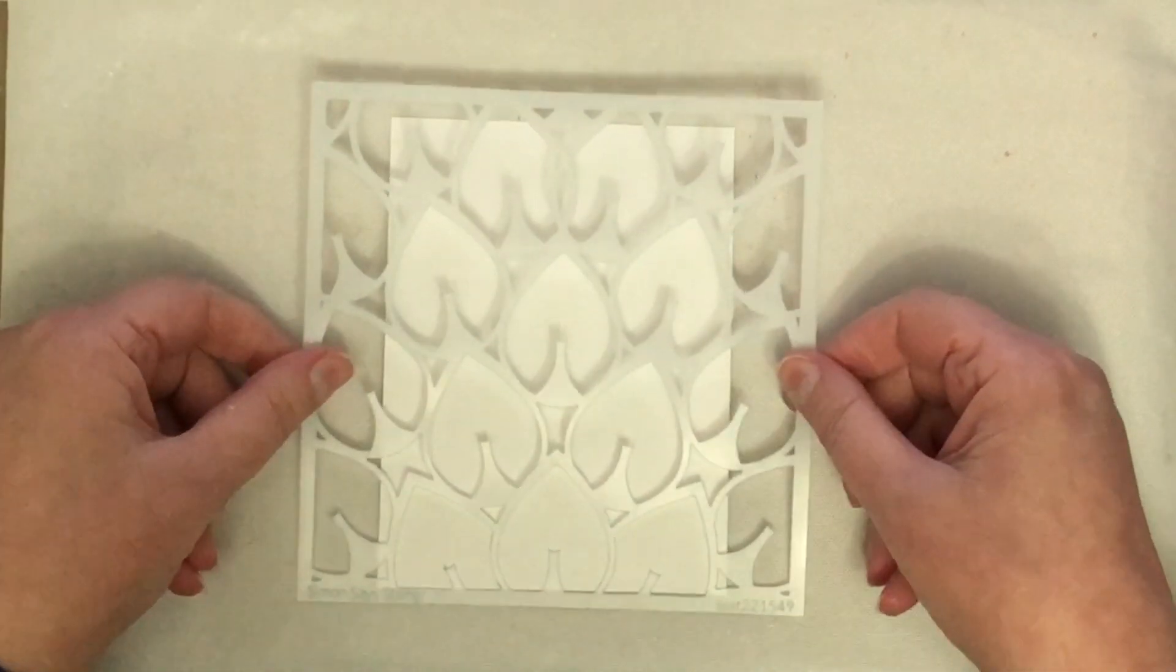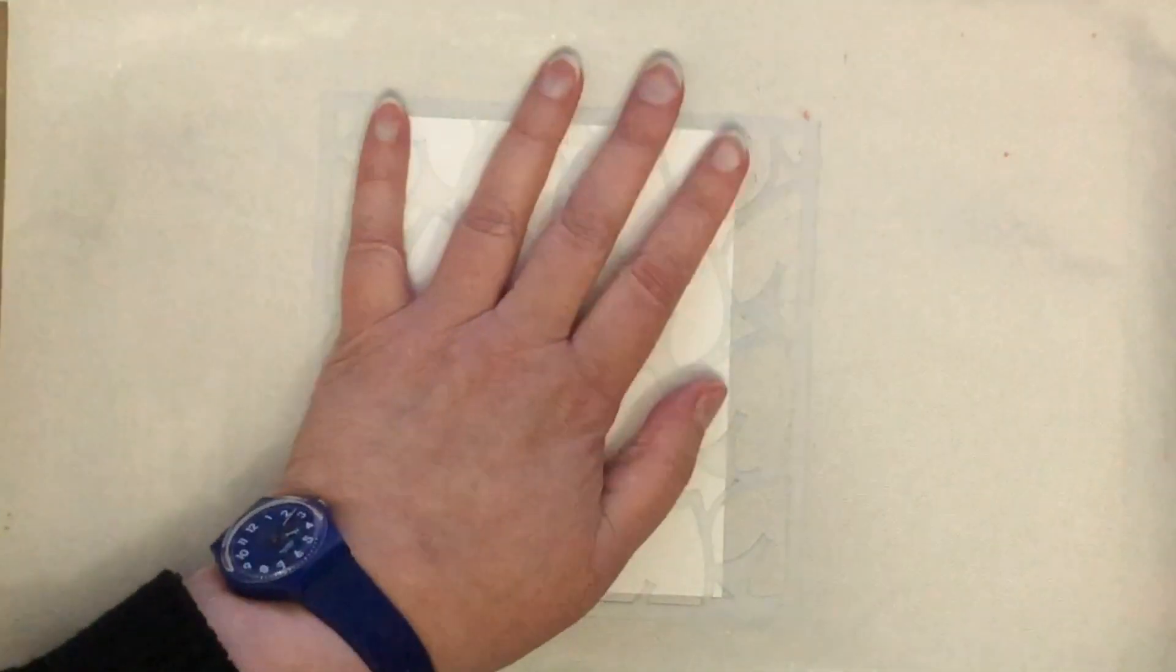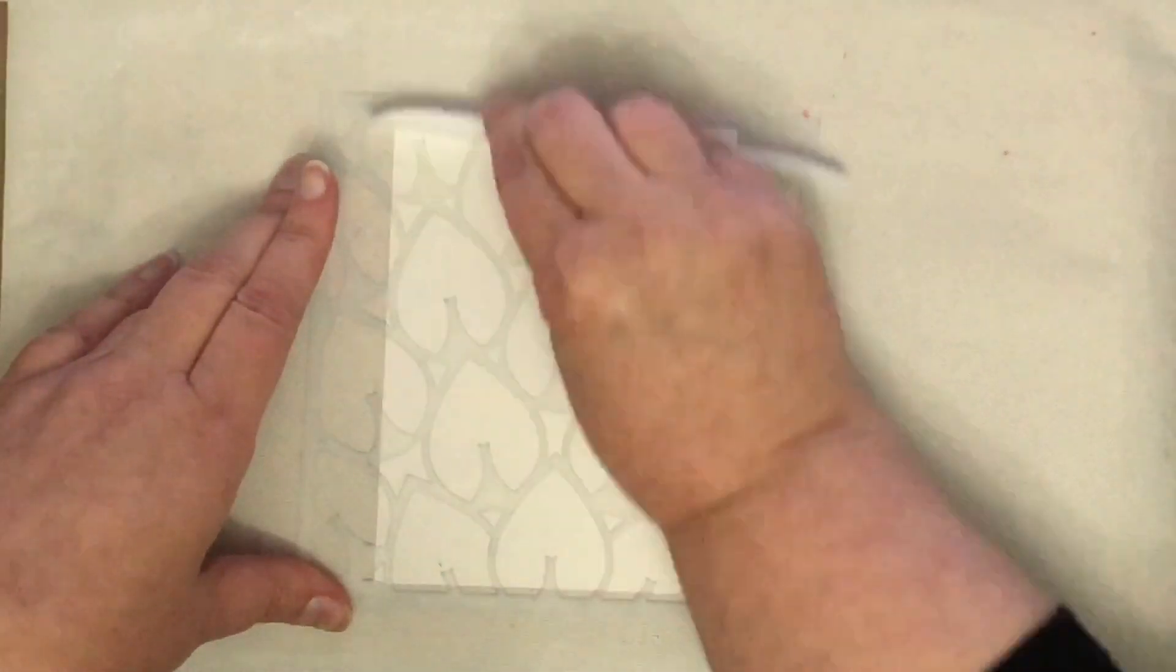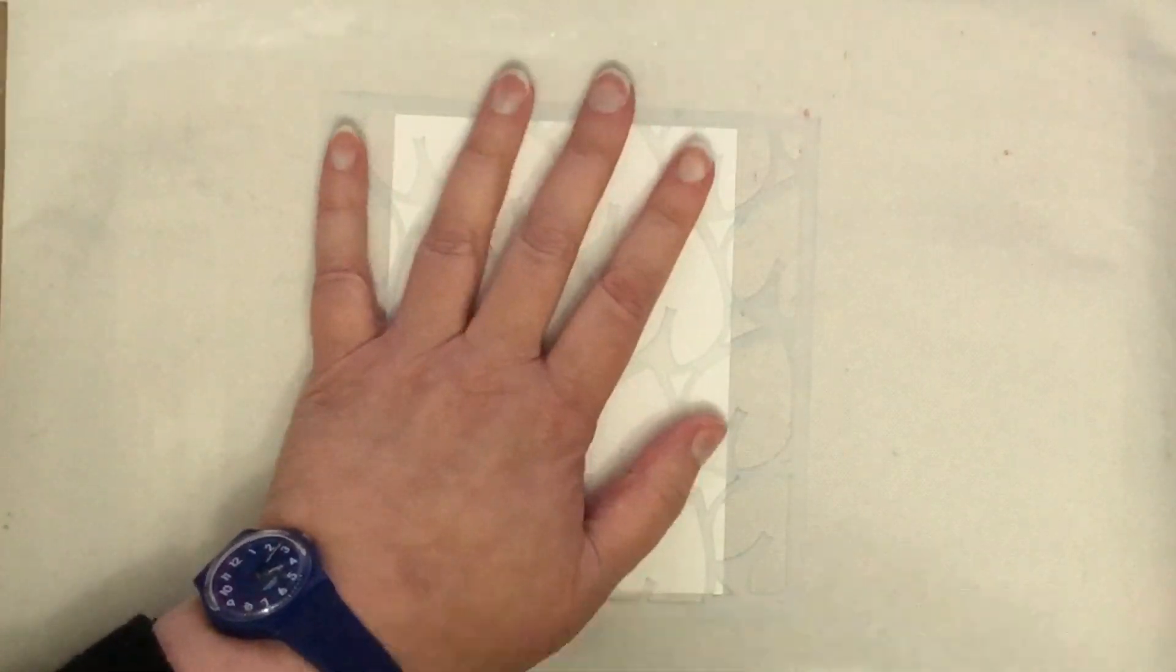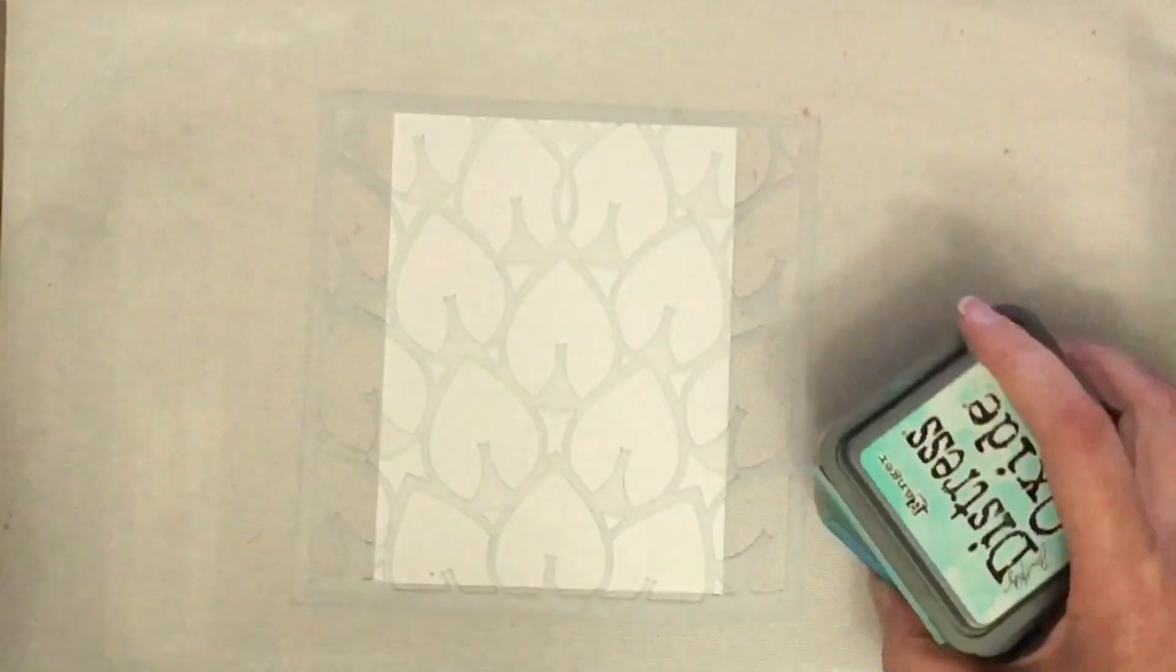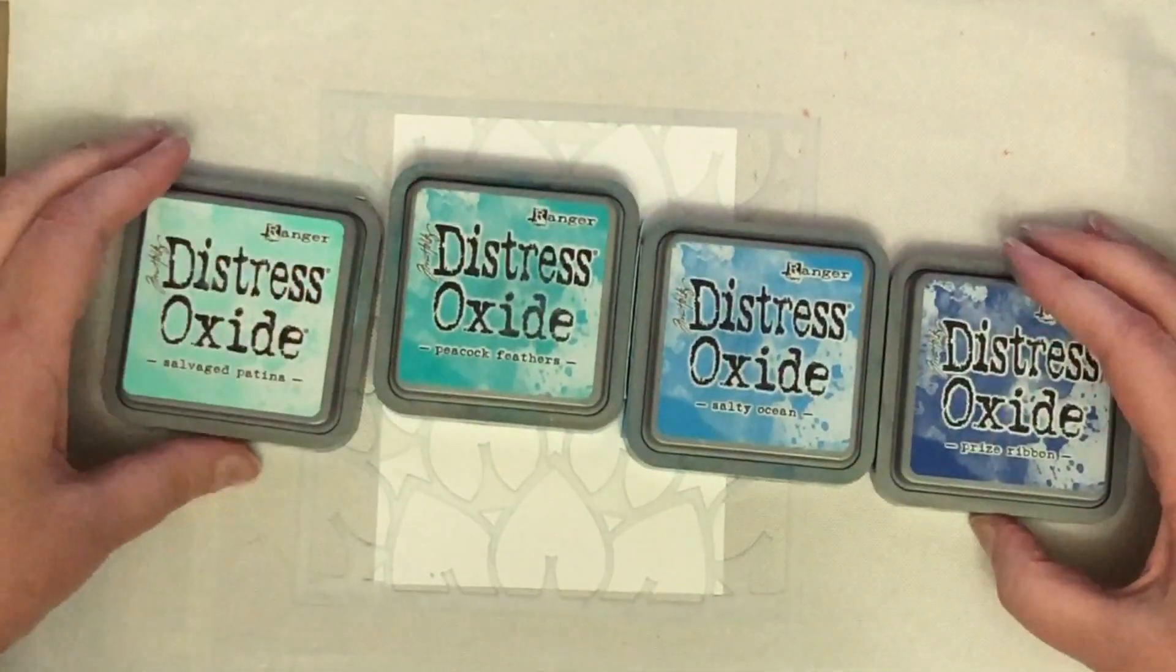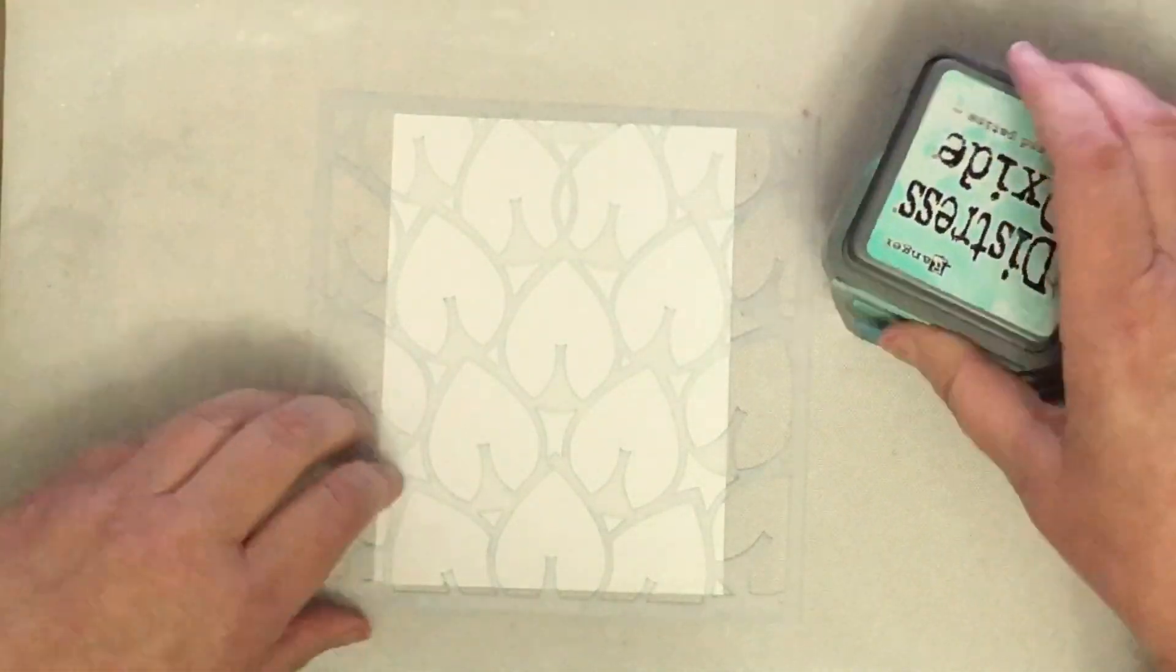In the meantime, while I'm letting that dry, I'm going to be using this stencil from Simon Says Stamp. This is the Mod Layering Leaves Stencil, and Laura actually used the exact same stencil in her card that I'm casing today. I already had some Pixie Spray on the back from last time, so I didn't need to add any extra. Now I'm grabbing out four different Distress Oxide inks: Salvaged Patina,